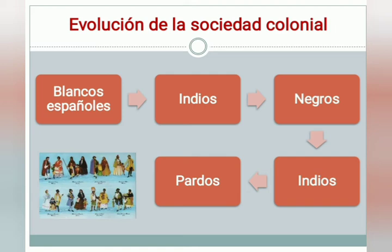Los indios, sin ninguna actividad política, estaban sujetos al pago de tributos. Y los pardos, que eran el grupo más numeroso pero sin derecho a la influencia política. De la sociedad colonial surgen un sinfín de características; una de ellas fue la surgida de la mezcla de grupos étnicos diversos, como fueron los blancos, indios y negros. Otra fue una sociedad dinámica que en un periodo relativamente corto pasó de un sistema de castas existente en el siglo XVIII.